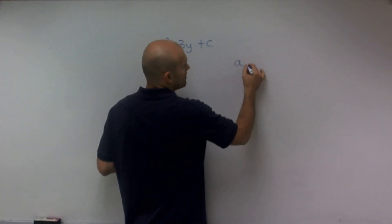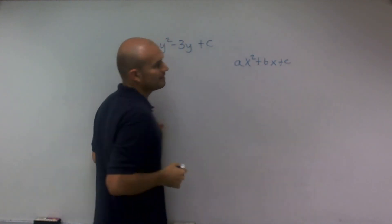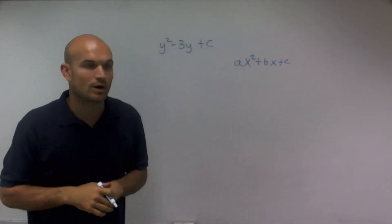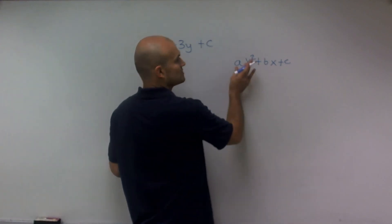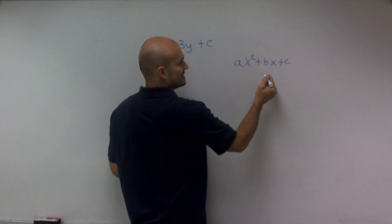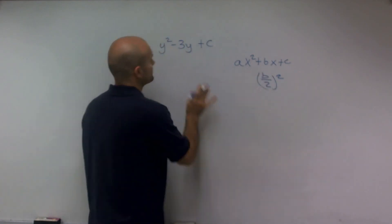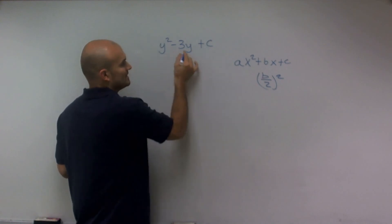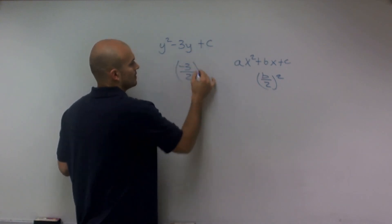A couple things to remember about completing the square is we're going to complete the square when we have a polynomial in the form of a quadratic. Then to find our value of c, what we first do is make sure our a is 1. Then we take the value of b divided by 2 and square it. So here my value of b is negative 3 divided by 2 squared.